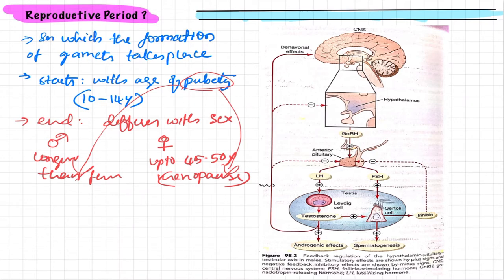The question arises: what happens at the age of puberty that stimulates spermatogenesis? What is the stimulant leading to the initiation of spermatogenesis? To understand this, let us focus on this chart.